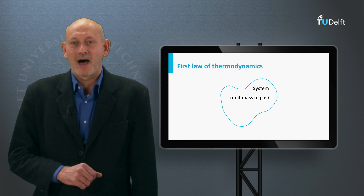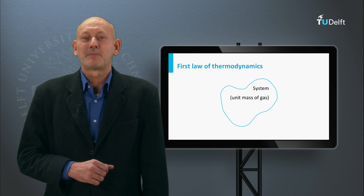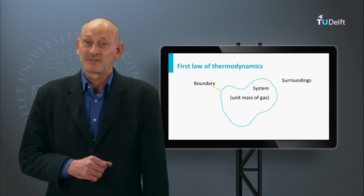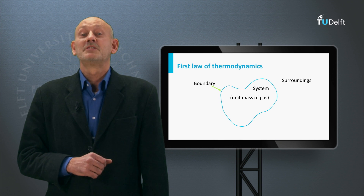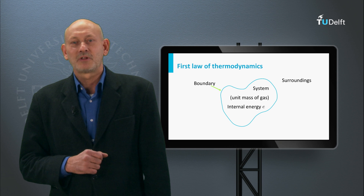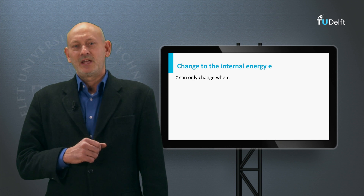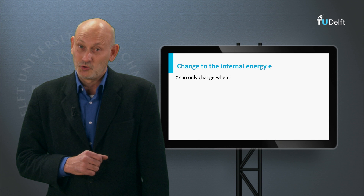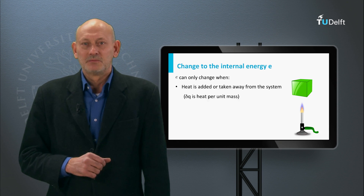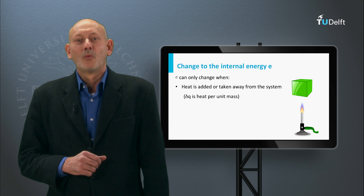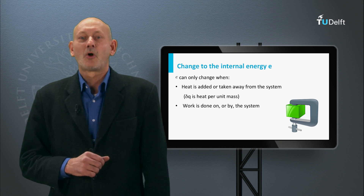Consider a fixed mass of gas, which we will call the system. The space outside the system boundary is called the surroundings. The energy of the molecules in this system is called the internal energy. Let E be the internal energy per unit mass. The only way E can change is when heat is added to or extracted from the system — let's call this delta Q — or work is done by or on the system, which we will call delta W.